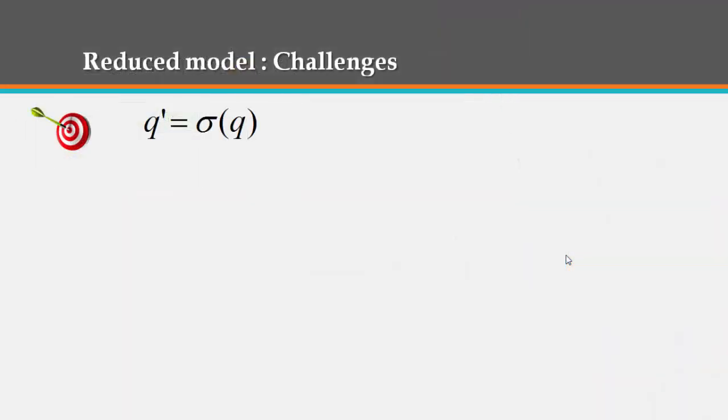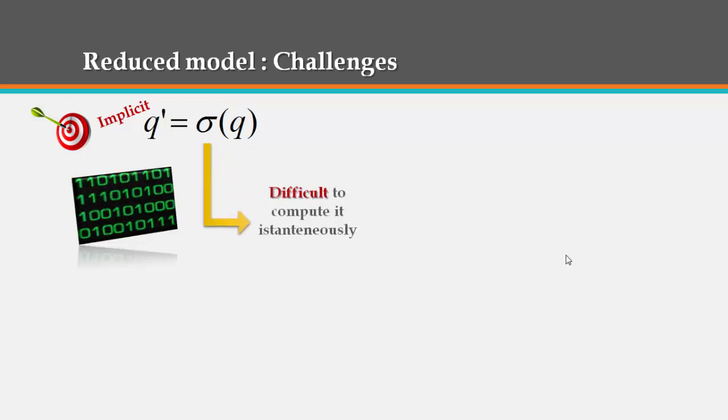In fact, this reduced model presents two challenges in its formulation. First, since this parameterization is an implicit function, it follows that we need to compute it instantaneously in the control loop, which is really a difficult task to do.